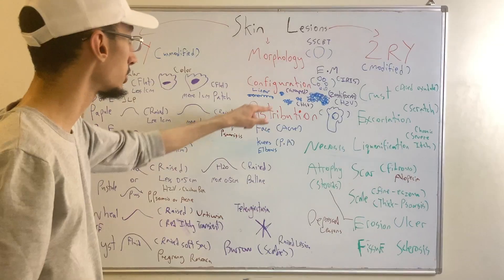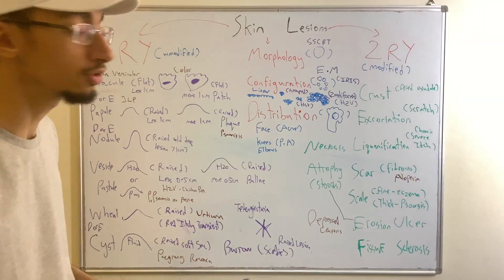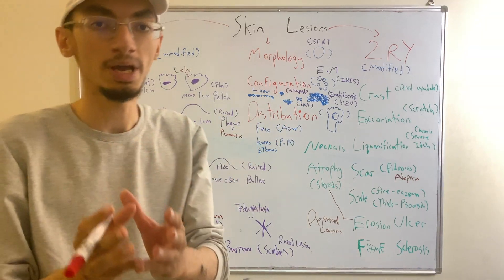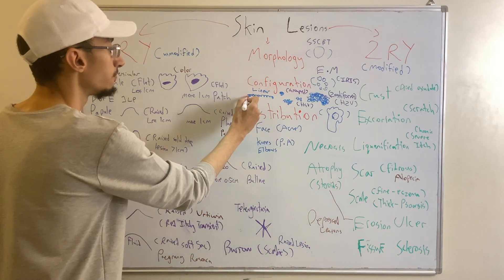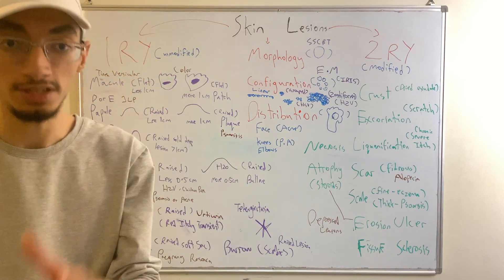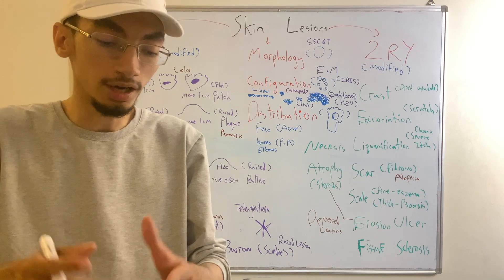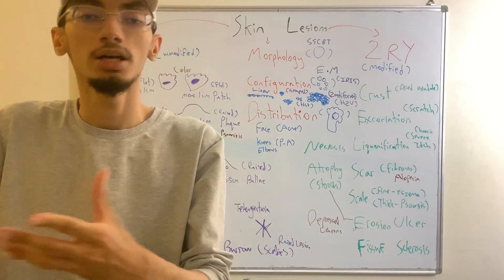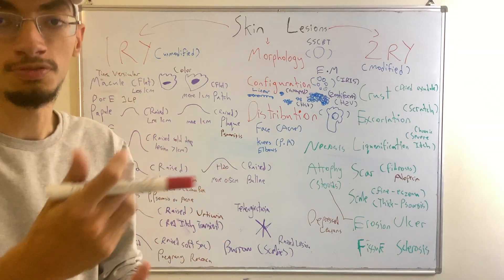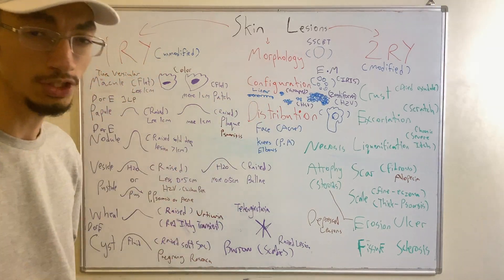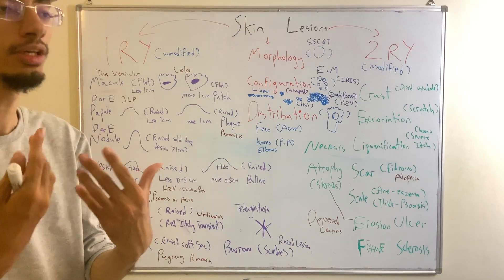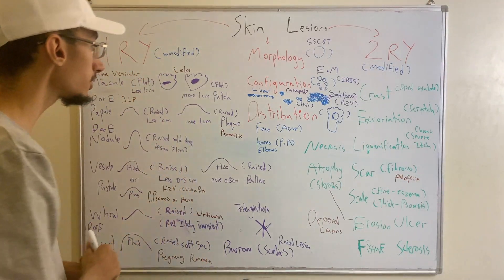Another configuration is grouped lesions — for example, in herpes simplex viral infections, vesicles can be grouped together in clusters. Lesions can also be arranged in a linear pattern. In configuration, you describe whether the lesions follow a specific named pattern. If they don't have a specific pattern, you can note that they have an undetermined or general arrangement.